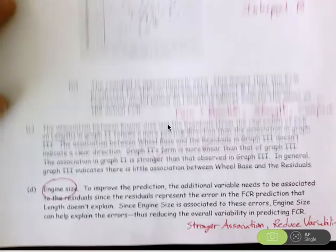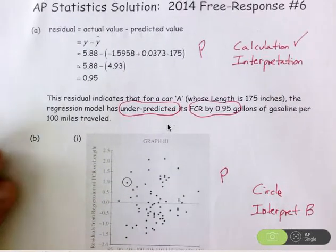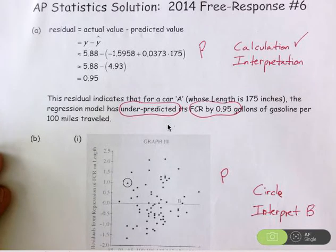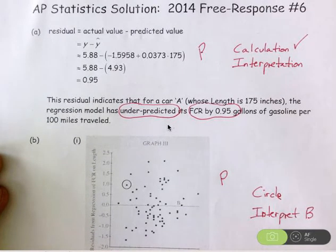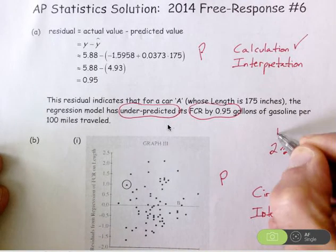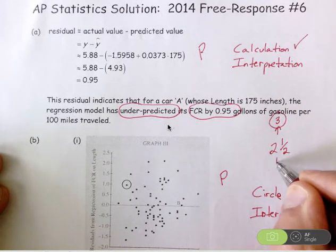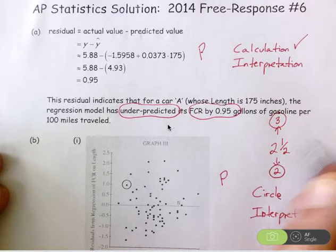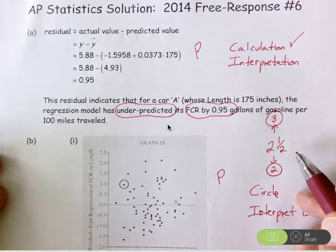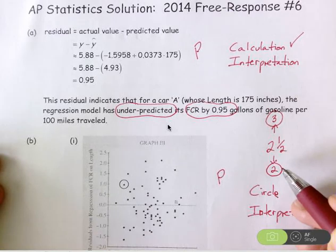Based on this rubric — E's being one point, P's being half a point — it is possible to get one and a half or two and a half points on this question. Then the question is scored either up or down holistically. So you can't get half points on a question; a two and a half would be scored up to a three or down to a two, holistically.